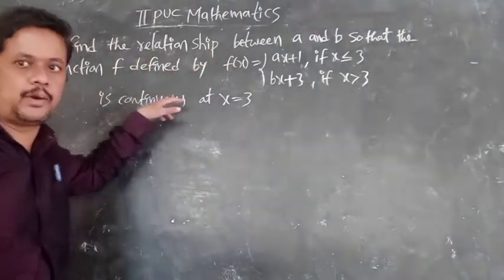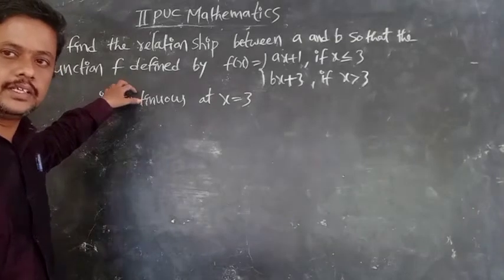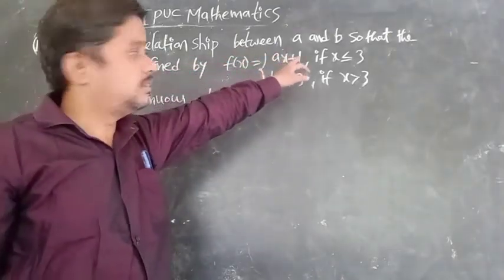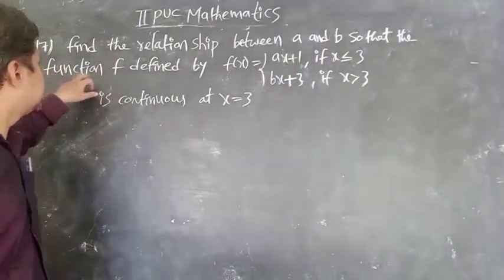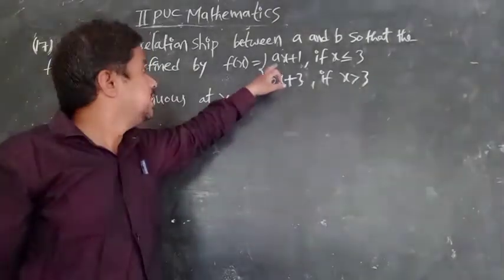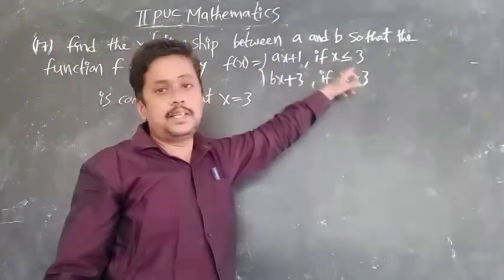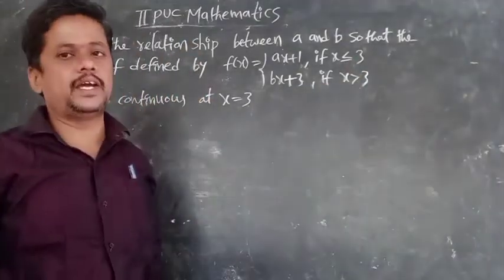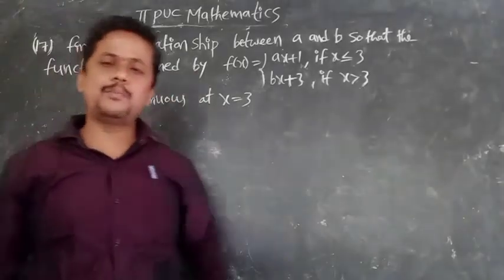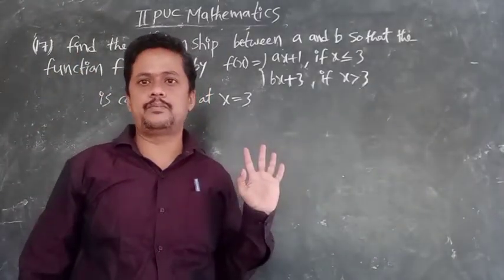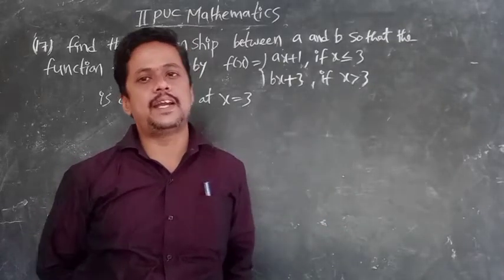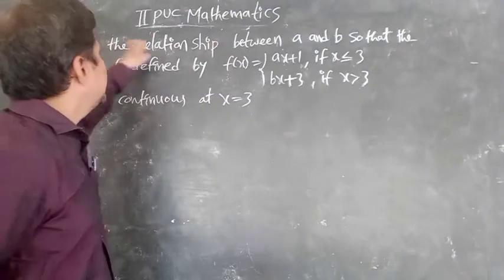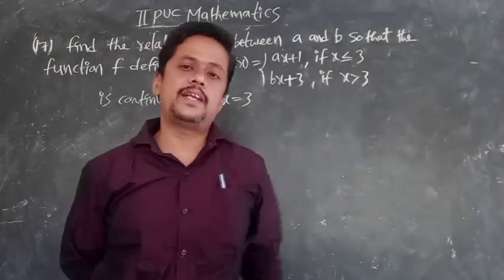Now, some other very important problems for the 4-mark synthesis. Find the relationship between A and B so that the function f(x) = ax + 1 if x ≤ 3, and bx + 3 if x > 3, is continuous at x = 3. The problem says continuous at x = 3, and what to find is the relationship between A and B.